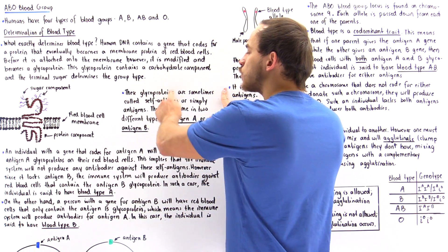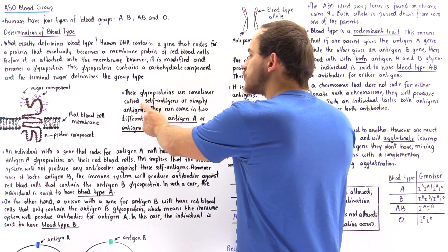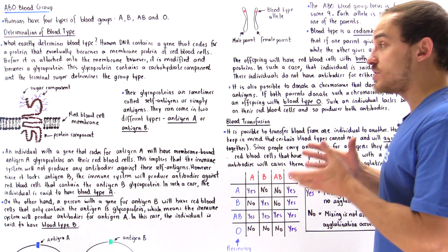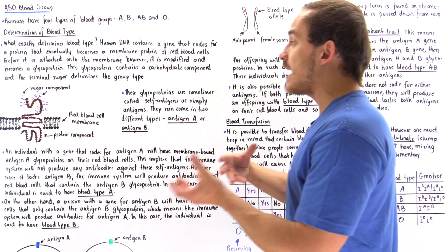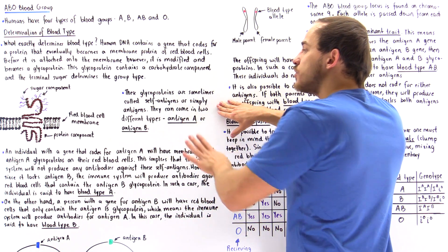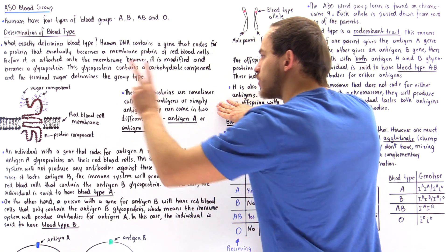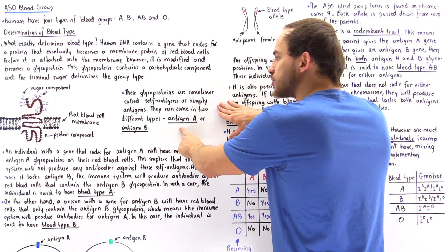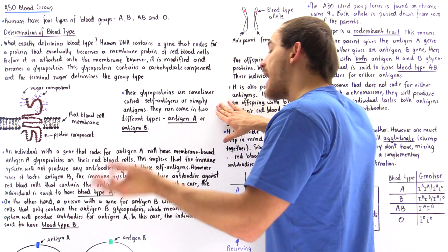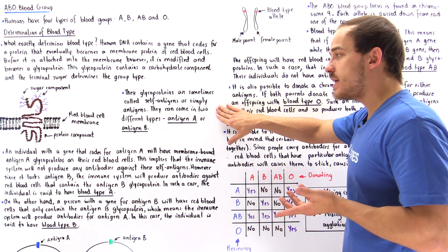These glycoproteins are also sometimes known as self-antigens, or simply antigens, as we'll see in just a moment, and it has to do with our immune system. There are two different types of glycoprotein — two different types of antigens. One is called antigen A or glycoprotein A, and the other is called antigen B or glycoprotein B.